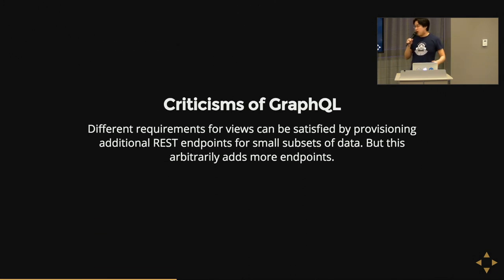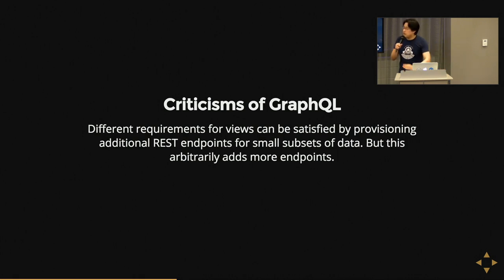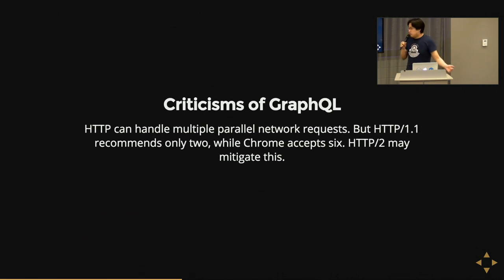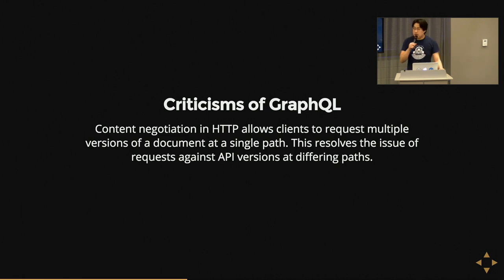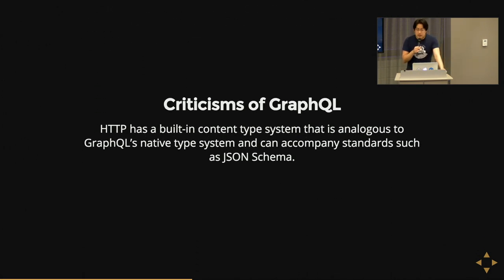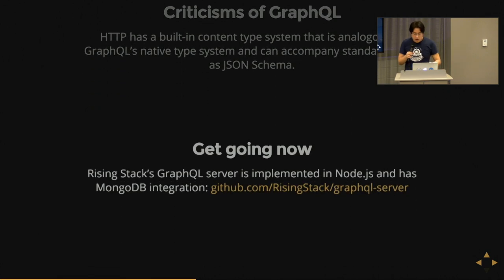Now there are some criticisms of GraphQL. Abstraction on top of abstraction can be a bad thing. You can provision more REST endpoints as solutions in the typical REST approach. HTTP2 will probably mitigate many of these round-trip problems to a great extent, so why do we need it in the first place? HTTP content negotiation can actually handle all that versioning at a single path without the API/v2 scheme. HTTP also has a built-in type system and can tie into things like JSON Schema. If you want to get going now, since the Drupal module for GraphQL is not currently ready, please feel free to use this GraphQL server.